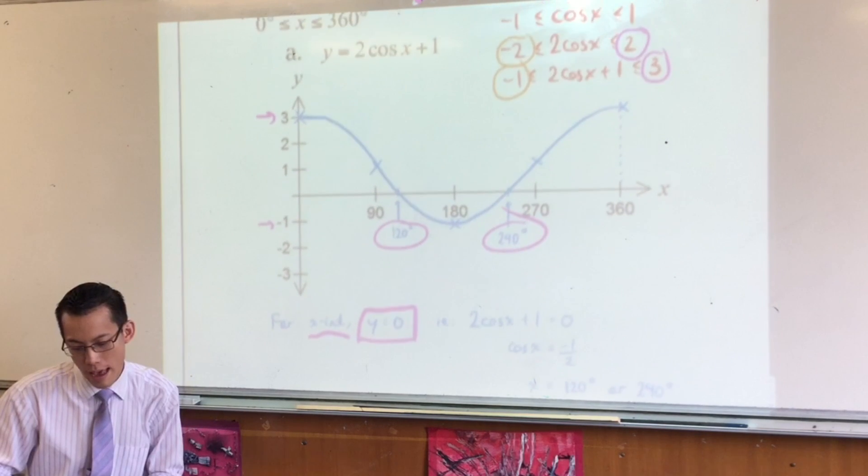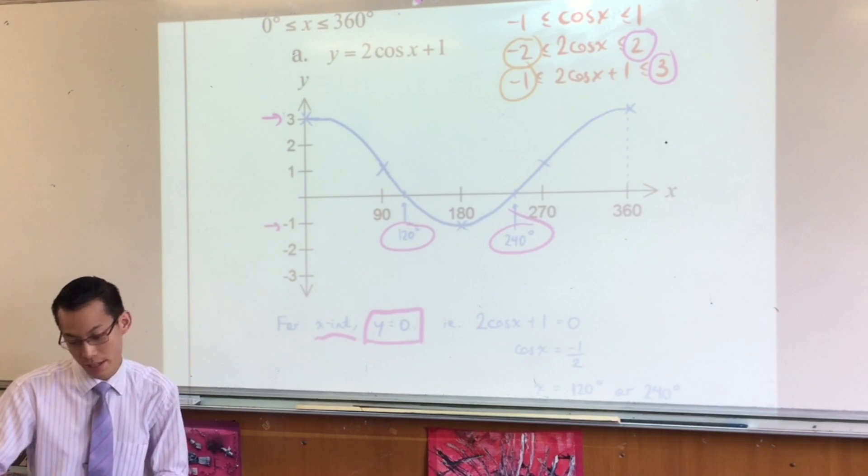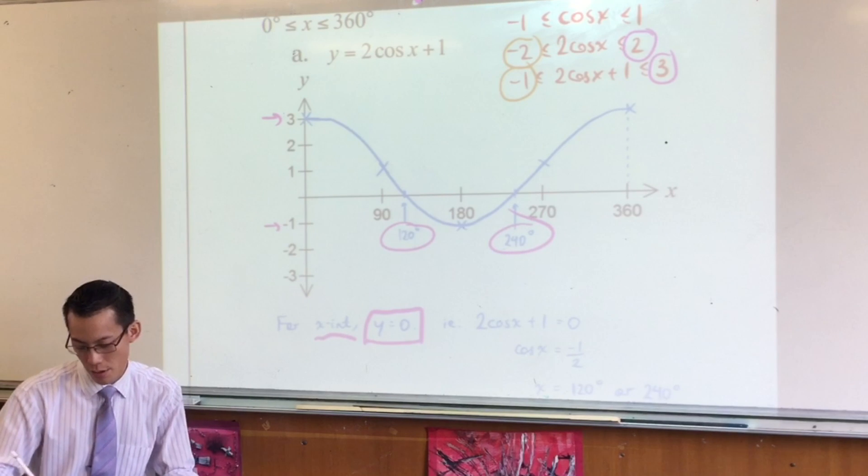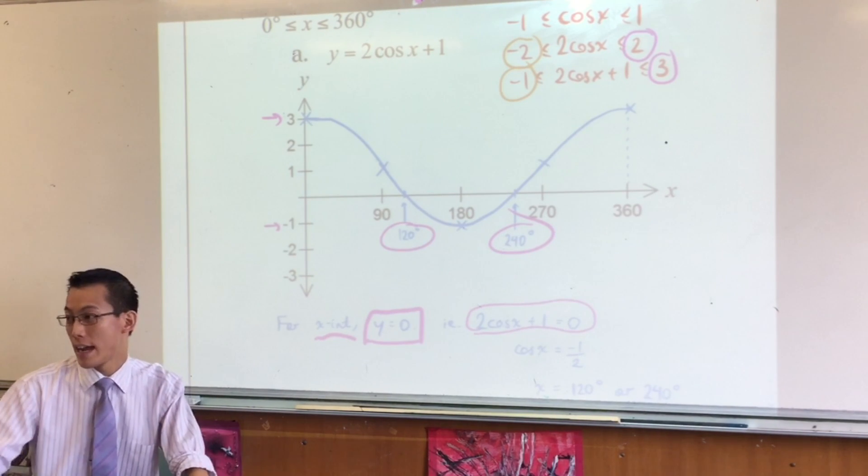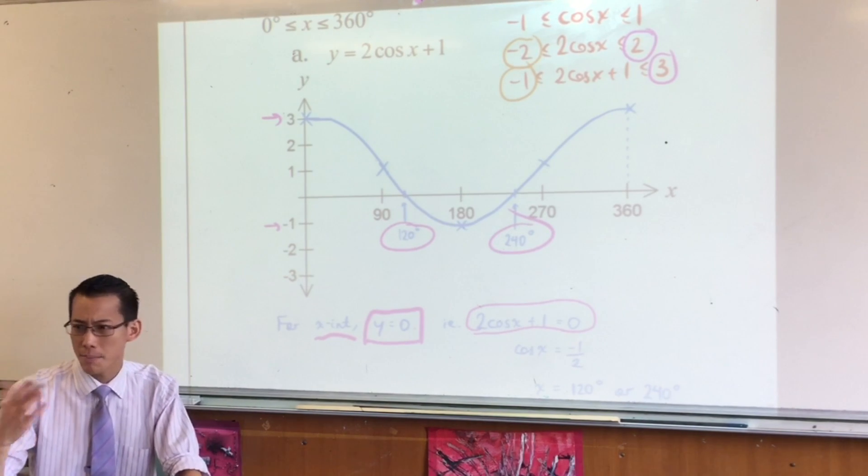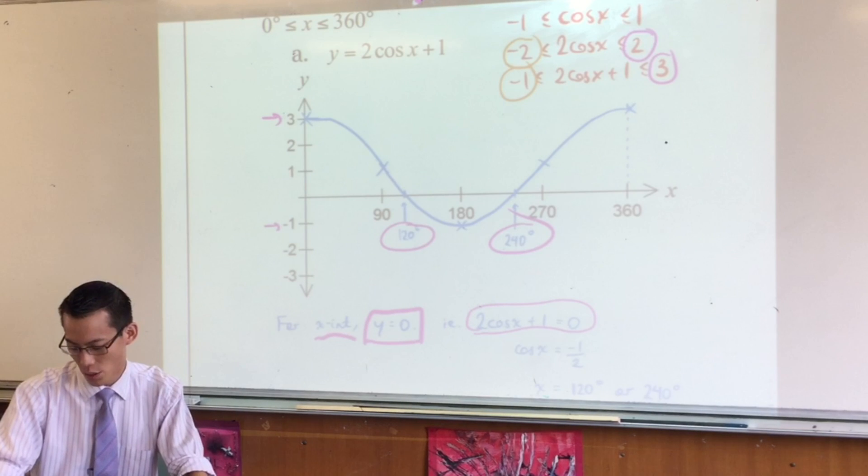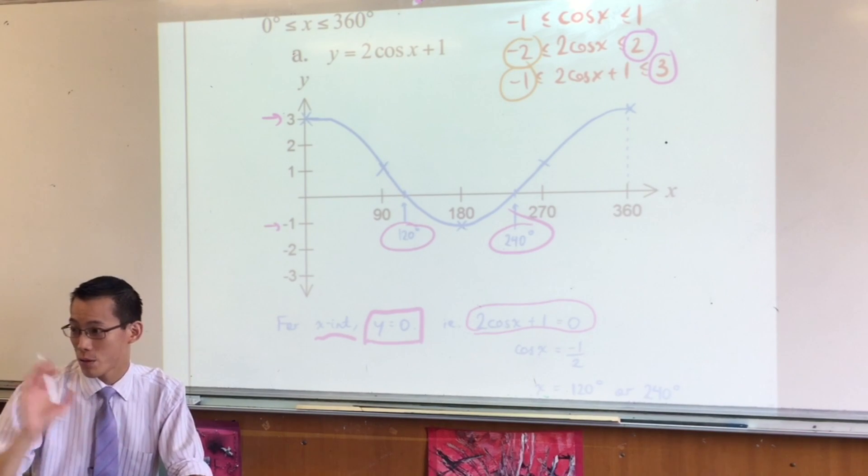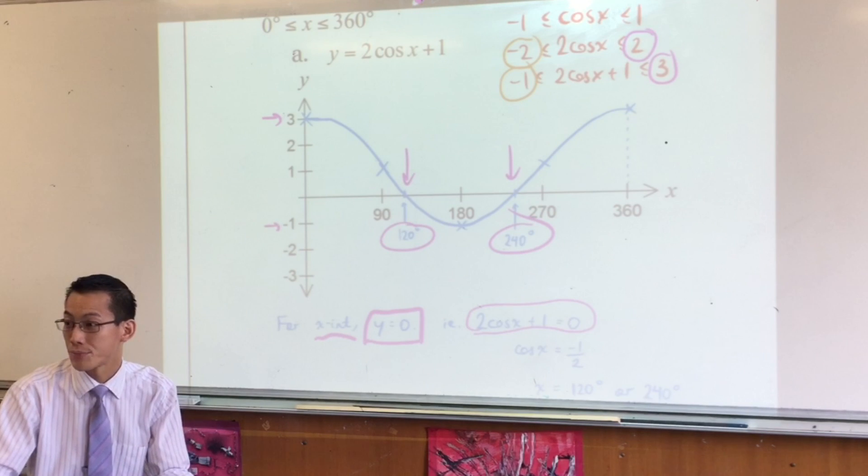So I let y equal 0. The equation of the line is y equals 2cos(x) + 1. So I said 2cos(x) + 1 equals 0. I just had to rearrange, change the subject, cos(x) equals -1/2. And that's the basic trigonometric equations we've been dealing with over the last week or so. So I got my two values out of that, Quadrant 2, Quadrant 3, as you can confirm by looking at the graph.